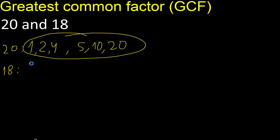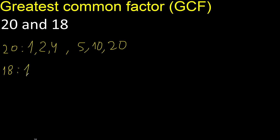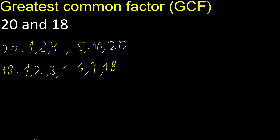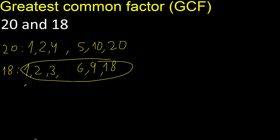Factors always start with 1. 18 divided by 1 is 18. Next, divided by 2 is 9. Divided by 3 is 6. Next, cannot be divided by 4, cannot be divided by 5. Next, 6 — 6 is already here.